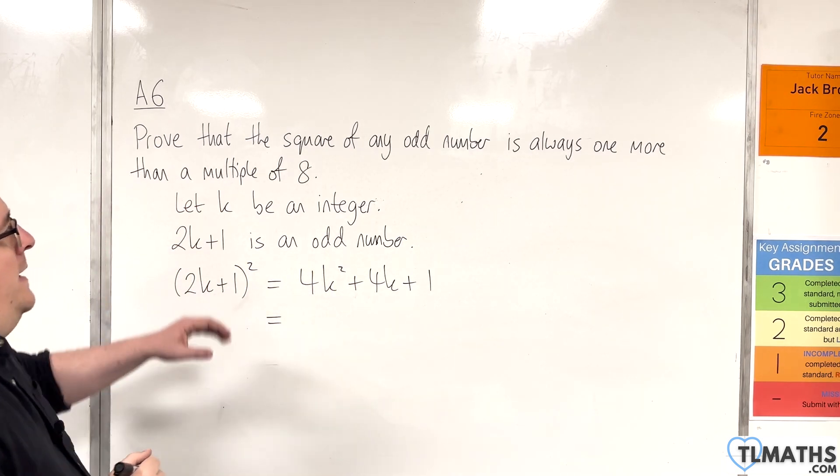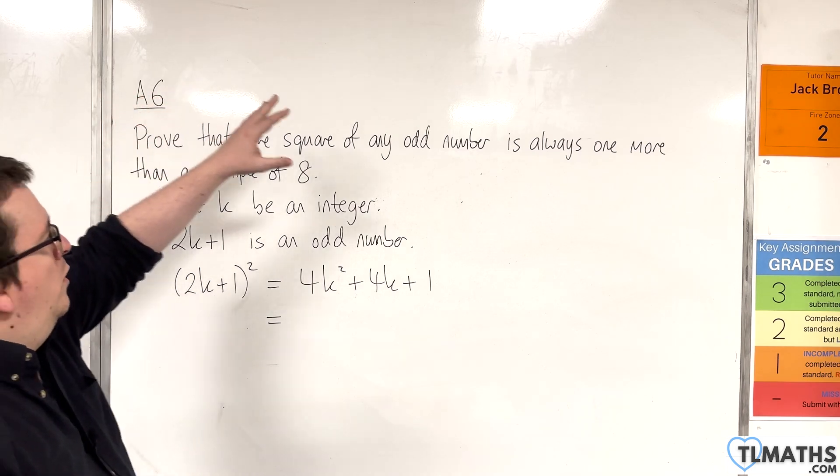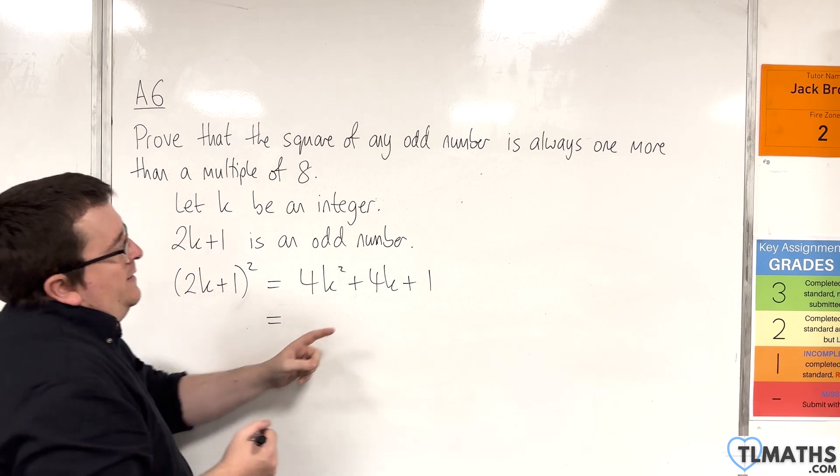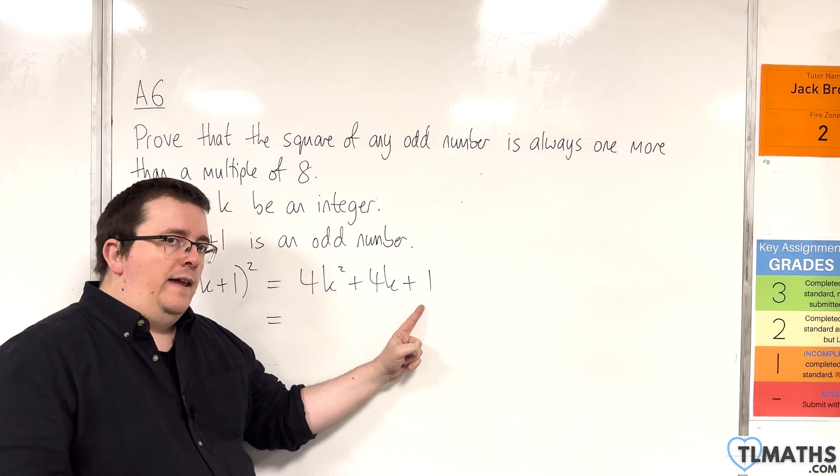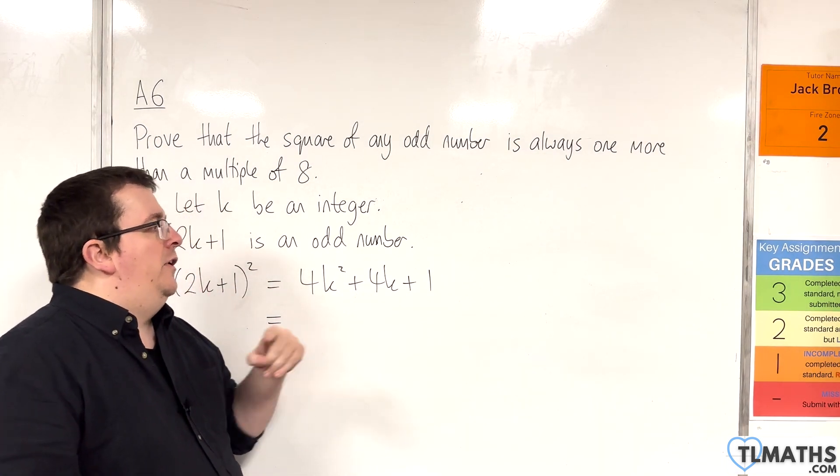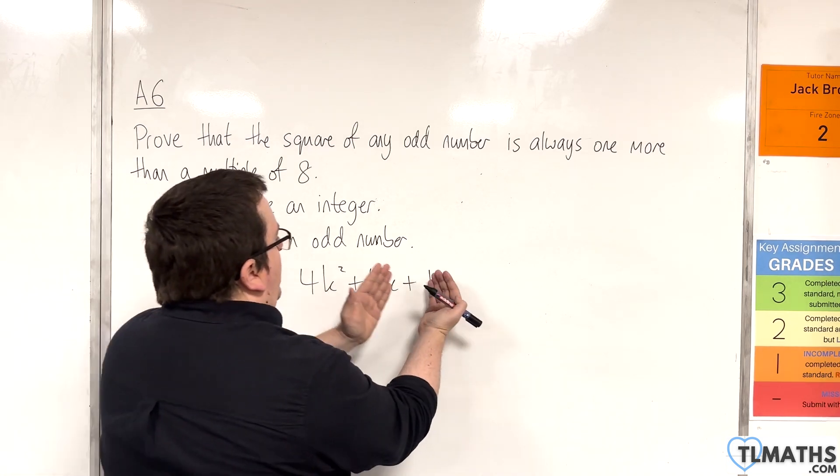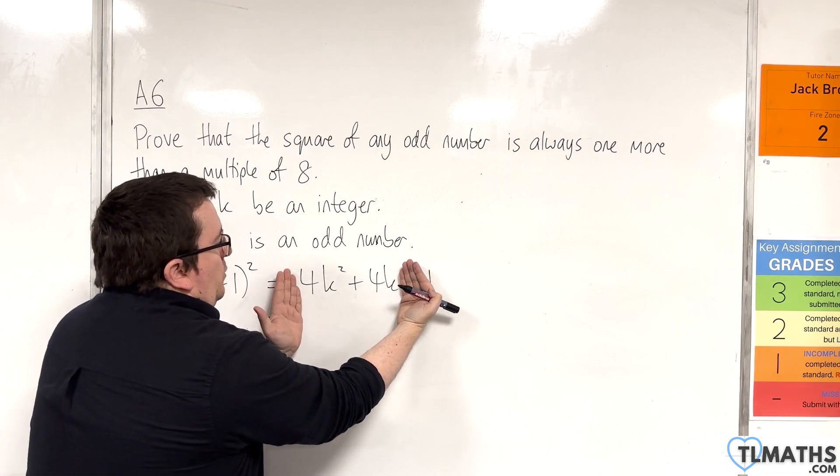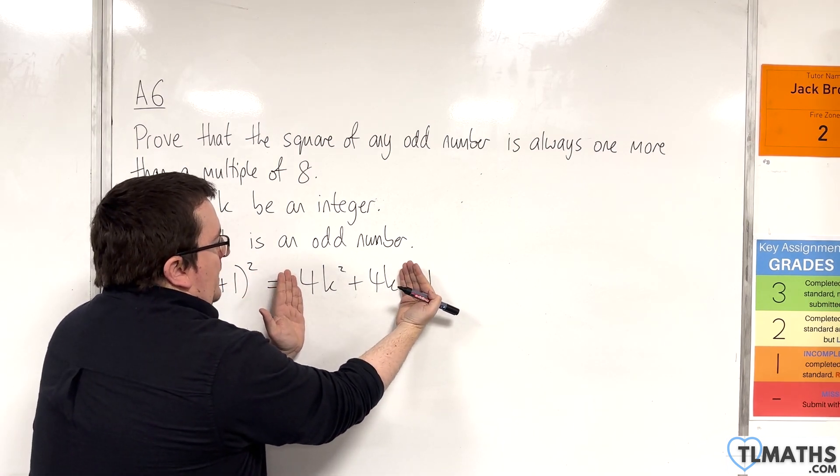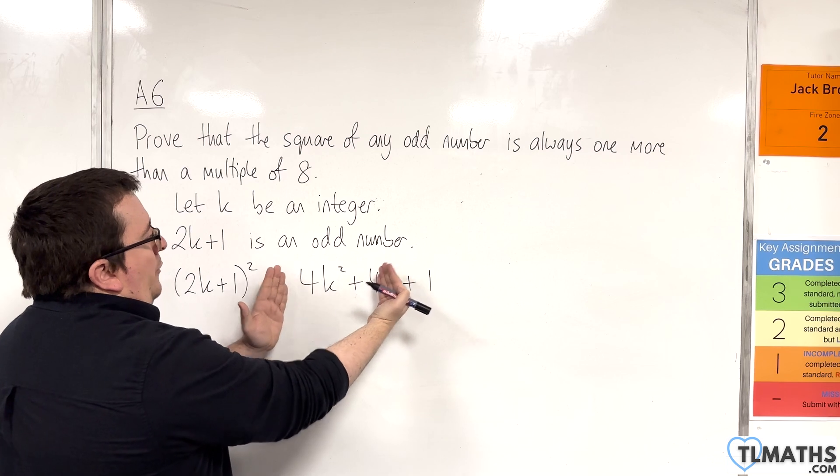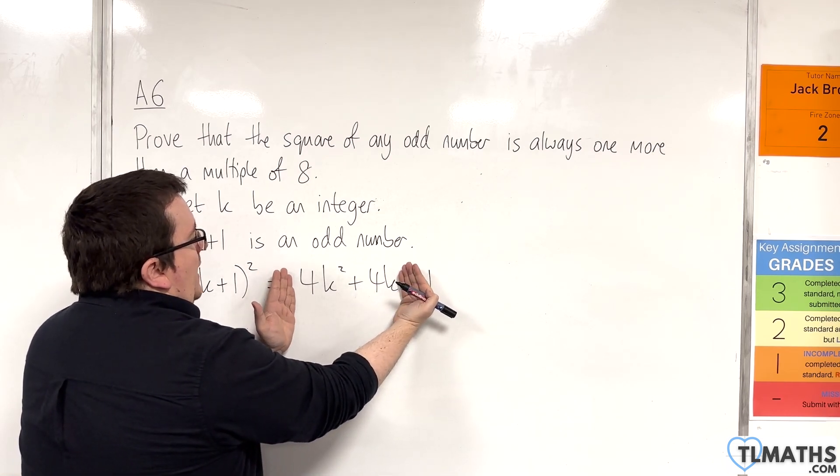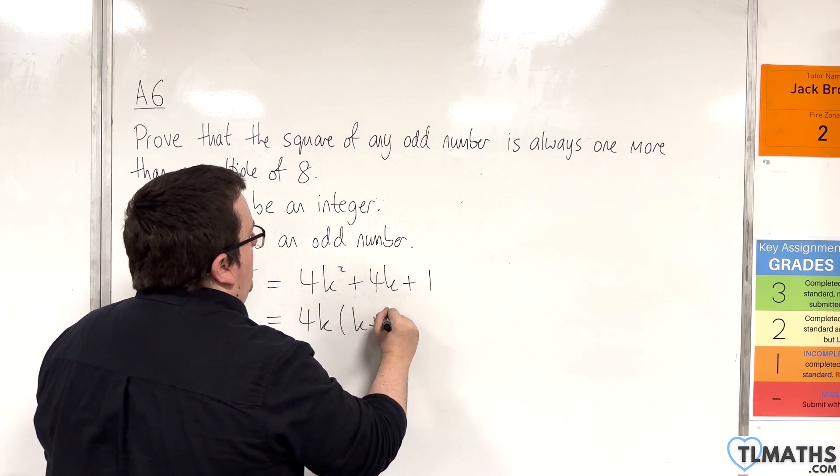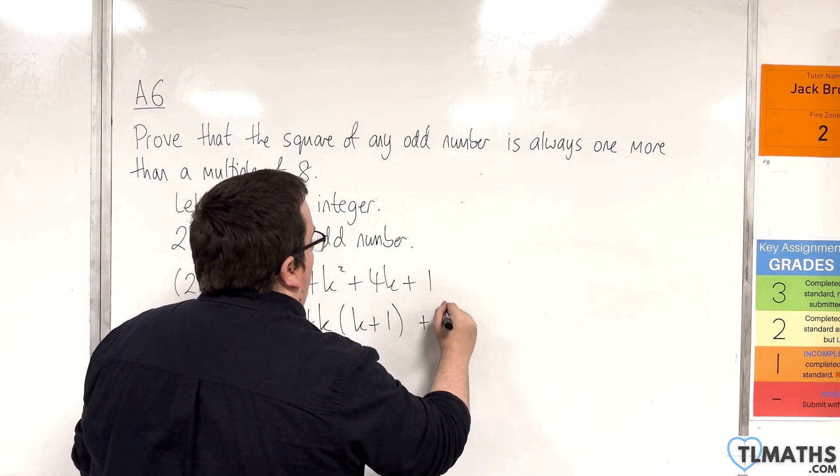The fact that the proof is wanting us to get to a point where it's always one more than a multiple of 8, the fact that we've got that plus 1 there is a telltale sign that it's one more than something. So if I just keep that plus 1 on the outside and focus on 4k² + 4k now, I can factor 4k out of those two terms and I'd have 4k(k + 1) plus 1 on the end.